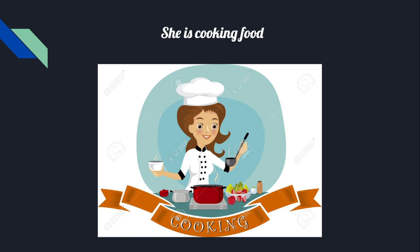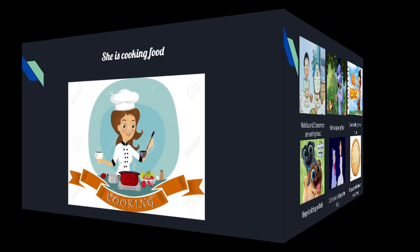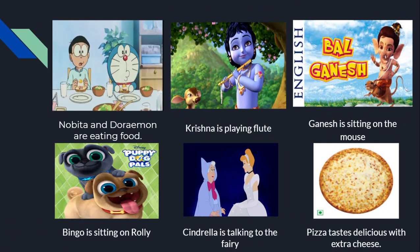'She is cooking food.' In this sentence, cooking becomes the work and the action of cooking acts on food, so food becomes the object and she becomes the subject. If we ask the question 'Who is cooking food?' the answer is 'she,' so she becomes the subject and food becomes the object.